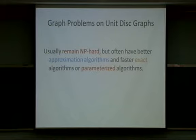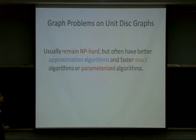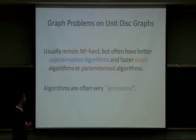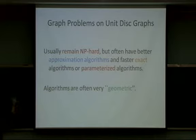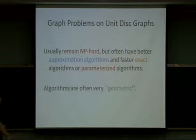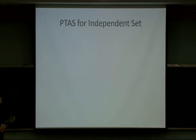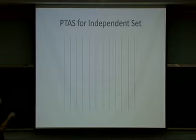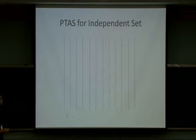However, these algorithms are often very geometric in nature, really using the model that these are unit disks in the plane. I'll give you a geometric approximation scheme for independent set on unit disk graphs. Suppose I give you a bunch of points in the plane and want to approximate independent set. I partition the plane into vertical slivers of width 1 and label them 1, 2, 3, 4, 1, 2, 3, 4, ... — the number 4 is chosen arbitrarily. The width is exactly 1, and two points in non-adjacent slivers are too far apart to have an edge.